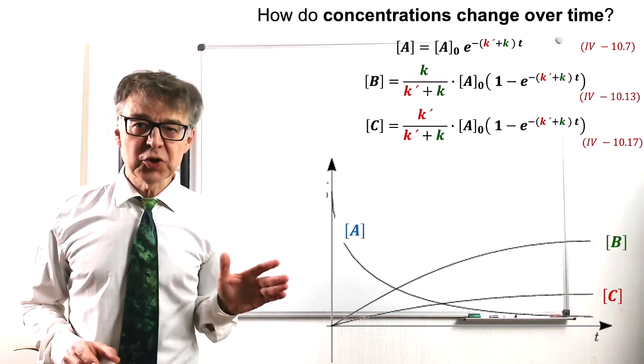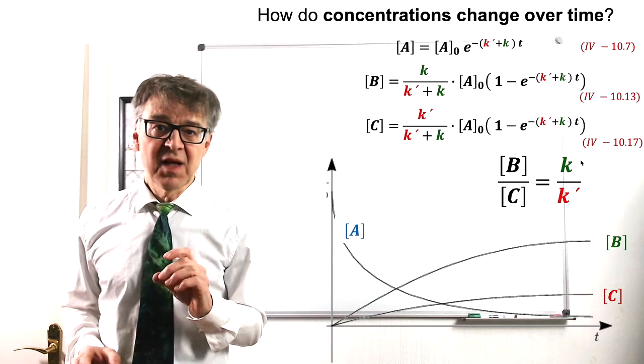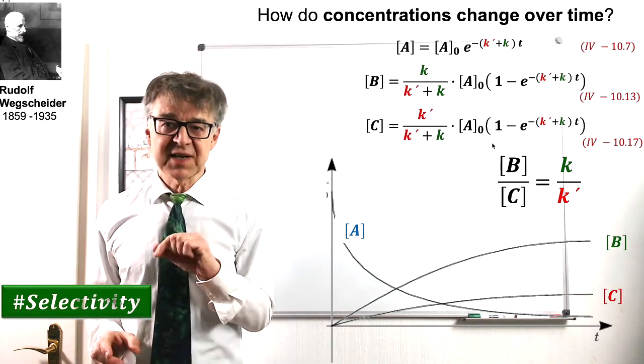It is interesting that the quotient of the two product concentrations B and C is constant. That's Wegscheider's principle of constant selectivity.